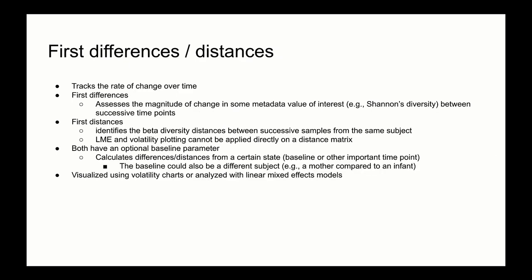What are some other ways we can assess longitudinal data? One way is to track the rate of change over time. The first difference action in the QIIME 2 longitudinal plugin allows us to assess the magnitude of change in some metadata value of interest, such as Shannon's diversity, between successive fixed intervals. A similar method, first distances, allows us to calculate the beta diversity distance between successive samples, which is useful for identifying trends in beta diversity over time. Both of these methods can then be visualized using volatility plots or further assessed using linear mixed effects models.